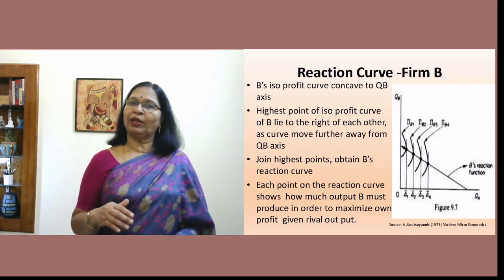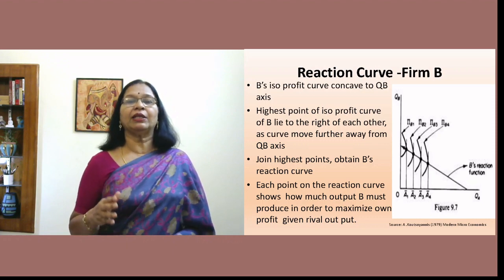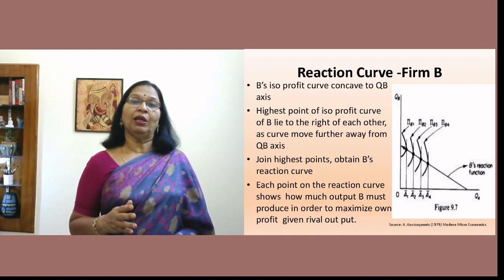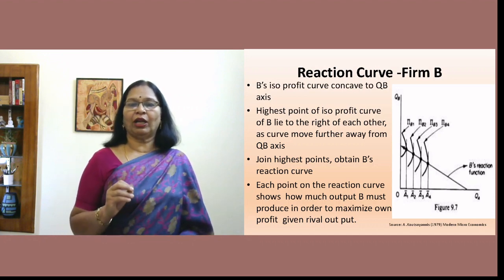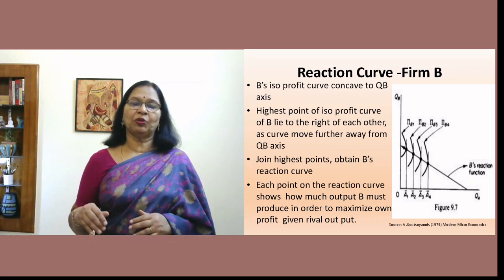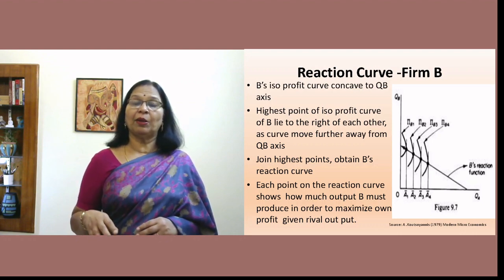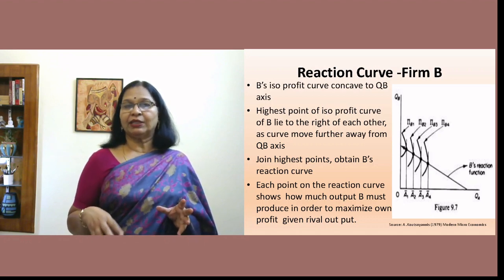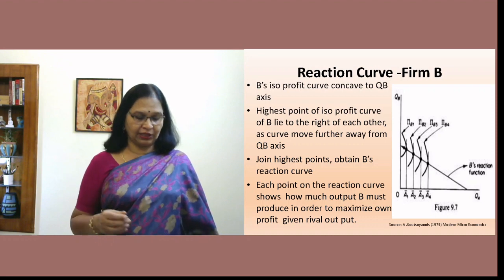For firm A, the isoprofit curve closest to the lower (horizontal) axis gives maximum profit. For firm B, the isoprofit curve closest to the vertical axis is most profitable. When firm A is producing A1, the maximum profit for firm B lies on isoprofit curve 1. Joining the highest points on each of firm B's isoprofit curves gives firm B's reaction curve — showing how firm B responds to changes in firm A's output to maintain or attain its profit level.